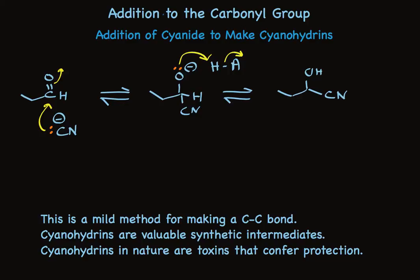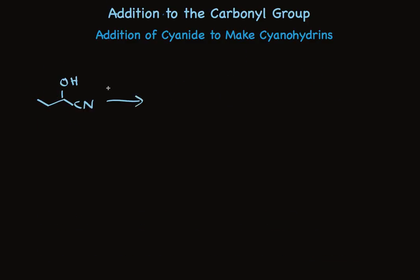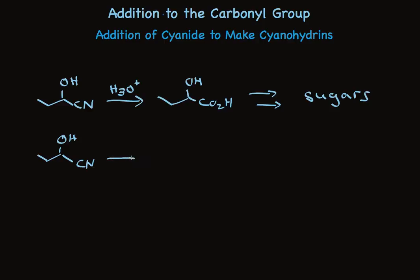Take a look at some of the synthetic potential. Cyanohydrins can be hydrolyzed using aqueous acid to make alpha-hydroxycarboxylic acids. These compounds can then be used to make other compounds we'd like to have, such as sugars. Cyanohydrin formation is a key step in a very famous synthesis of sugars. Alternatively, the nitrile group can be reduced using lithium aluminum hydride, followed by water in a second step, to make a primary amine — an amino alcohol. These compounds are valuable intermediates to other things.